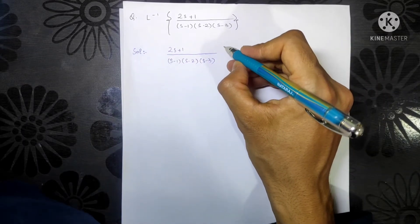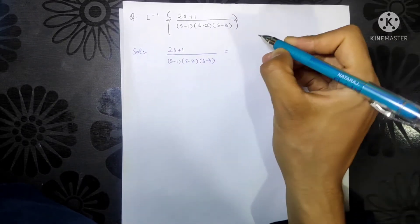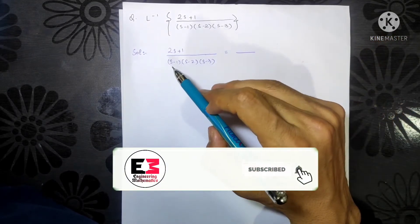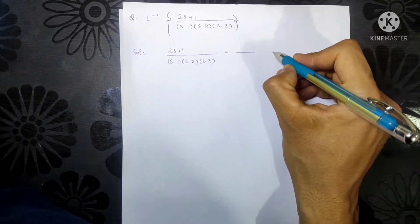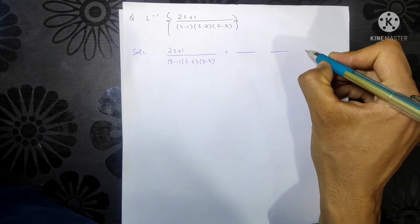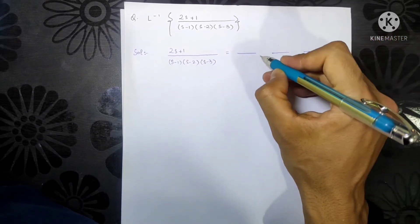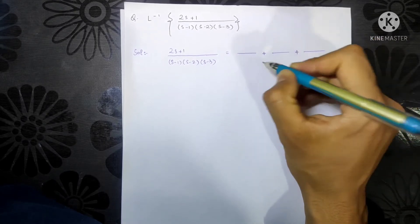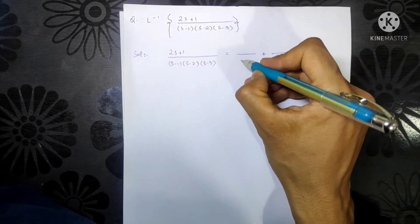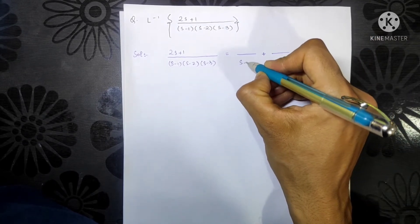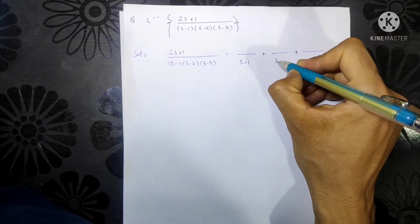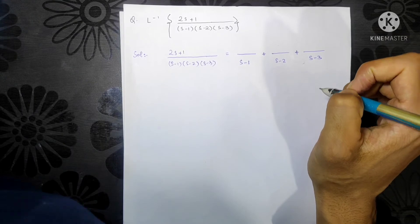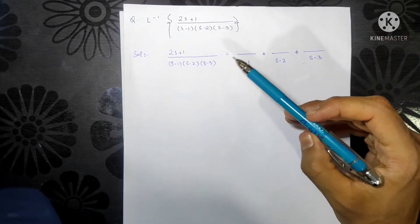We need to partially factorize it. How many terms will be on the RHS? Three terms, because we have three terms in the denominator — one, two, and three — and all terms will be separated by a plus sign. The denominators will be: first term (s minus 1), second (s minus 2), and third (s minus 3).